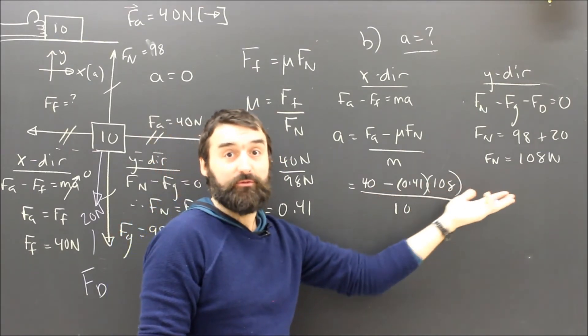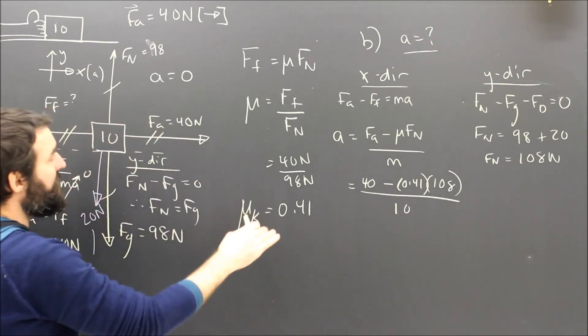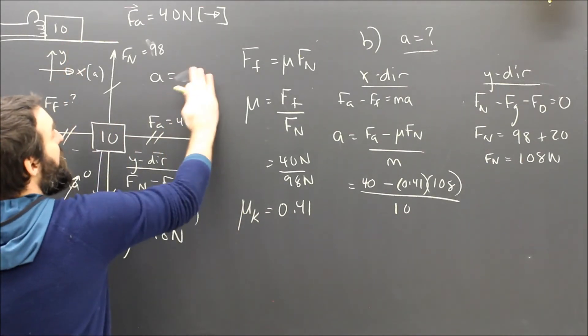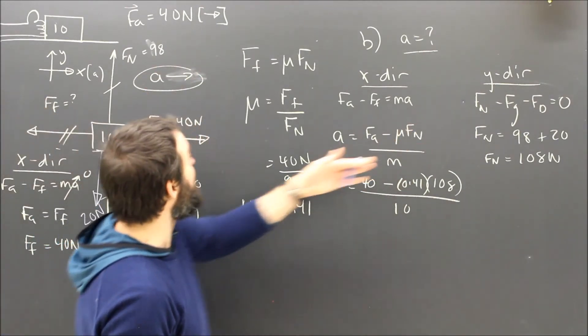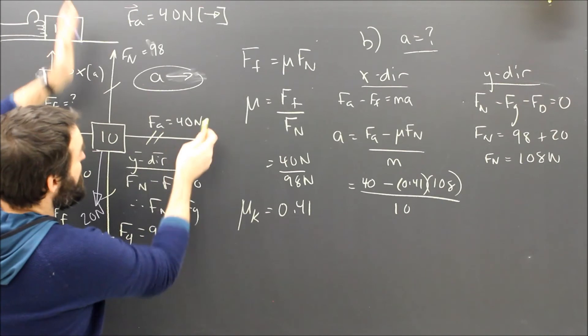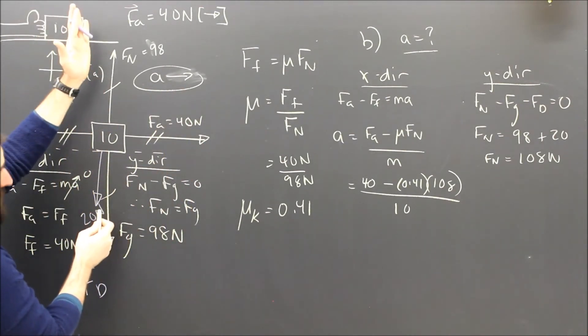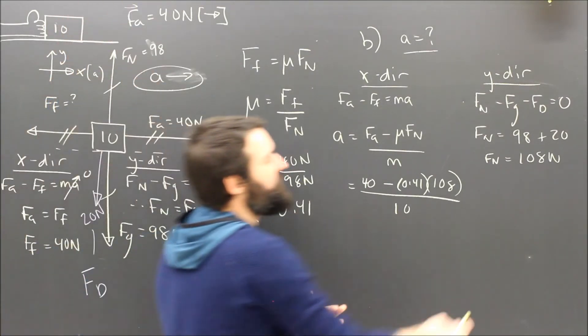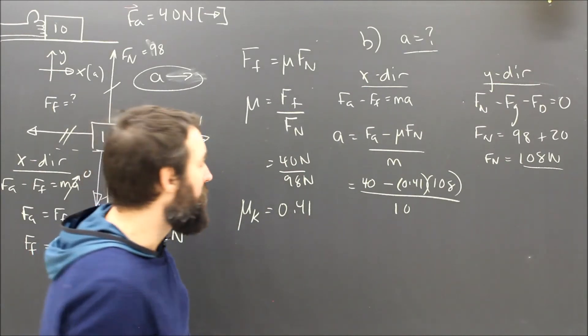Remember FN is not equal to FG. It was in part A because there was no acceleration up or down, and there were only two forces, so they had to be balanced. But in part B, the acceleration was that way. And so all of a sudden, the acceleration up and down is still 0, but now there's a third force here. So normal force has to balance gravity and the force that's down. It's got to balance both those. It's got to grow. FN is not equal to FG. Not always.